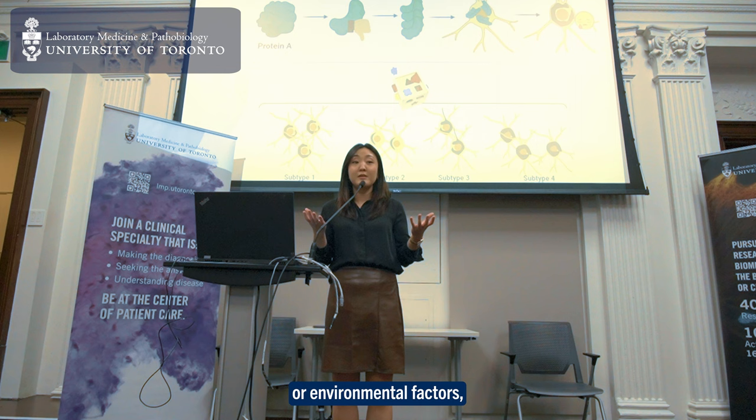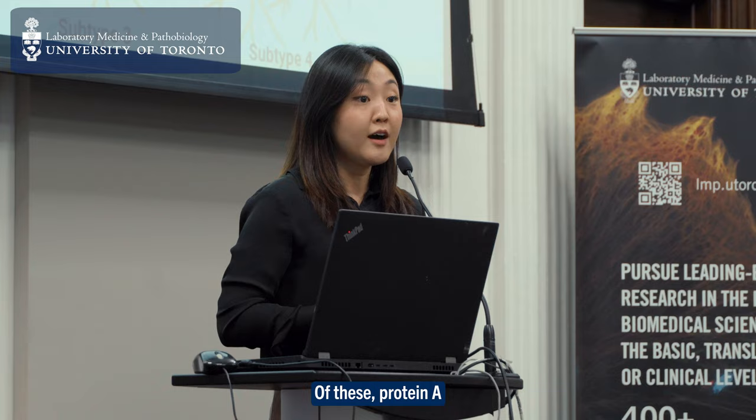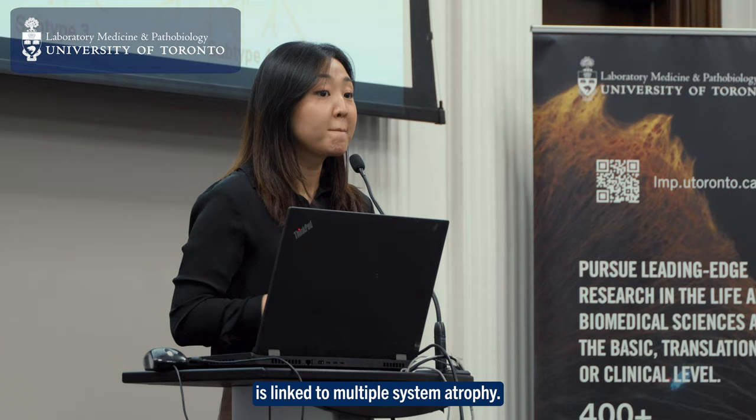Did you know that a brain is made up of many proteins? Either due to genetic or environmental factors, these proteins can change in shape, disrupting normal functions in the brain. Of these, protein A is linked to multiple system atrophy.